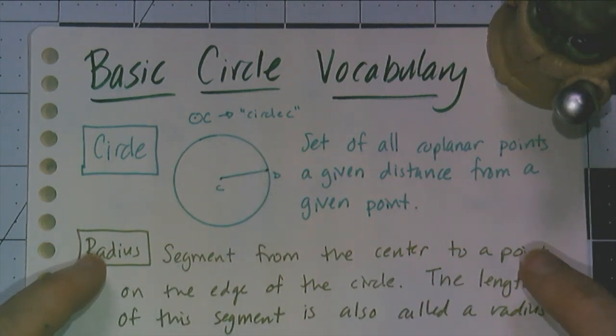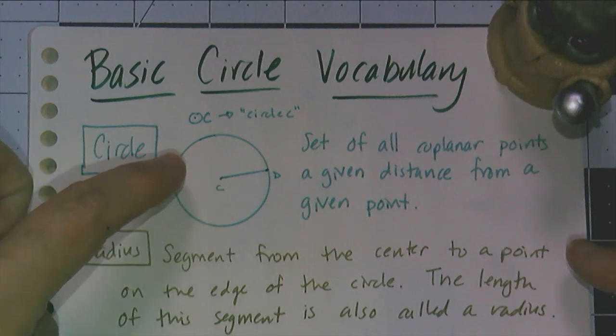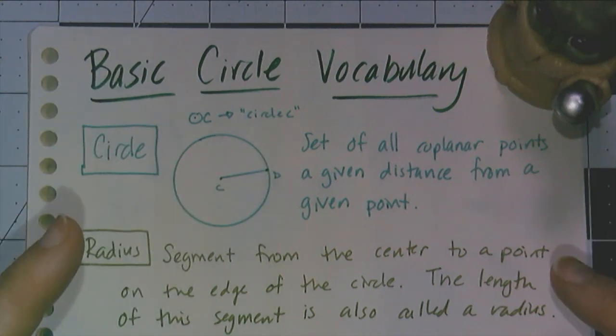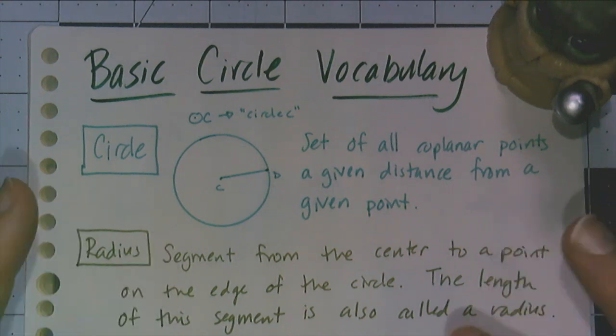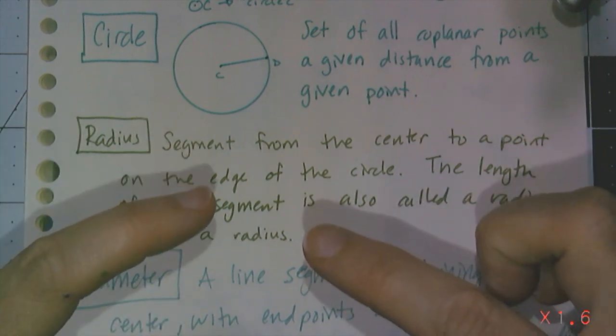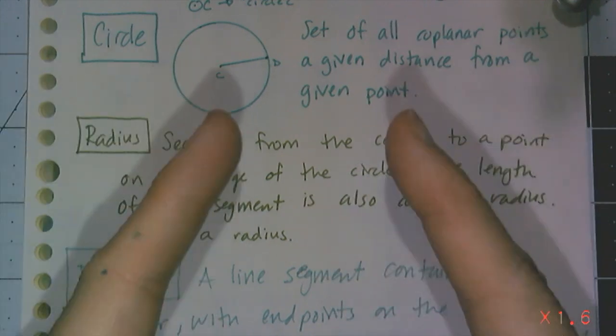Now the radius is a segment from the center to a point on the edge of the circle. The length of the segment is also called the radius. So CD is a radius, and its measure is also a radius. So you have to remember, or realize in a situation, do you need the line segment radius or the length radius?